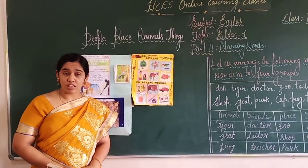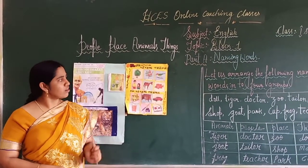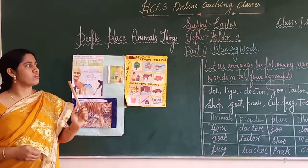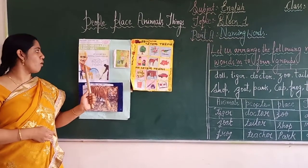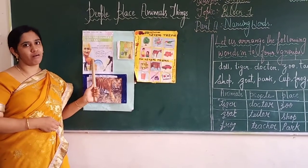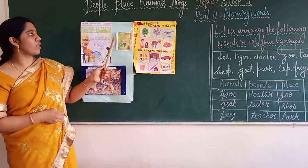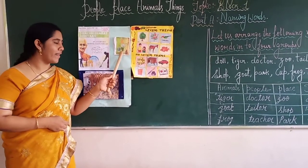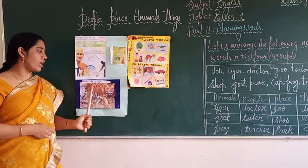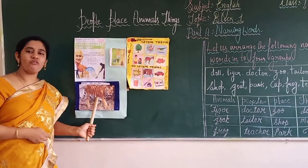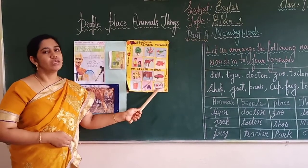What are these? These all are names. What is the difference between all these? Some names are about a person. For example, Mahatma Gandhi Ji is the name of a person. Some names are about a place. India is a place name. Tiger is the name of an animal. Book is the name of a thing.